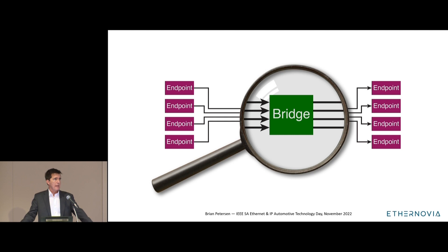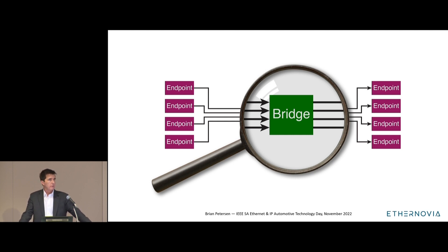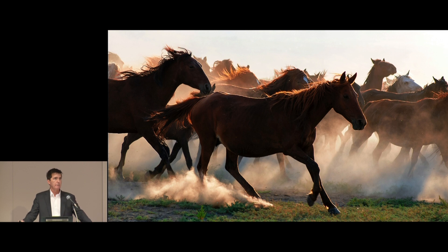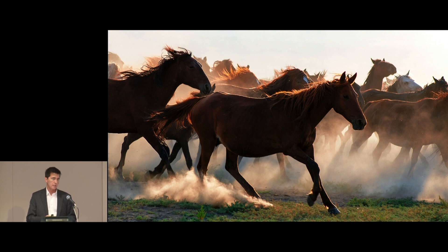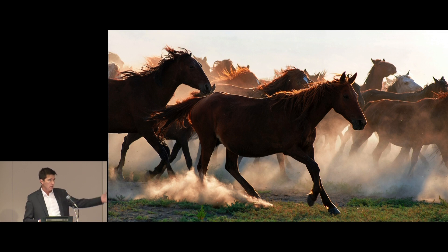Where should we look when we want to manage queue congestion? The TSN standards spend a lot of time focusing on the bridge, and that's understandable since the role of 802.1Q is to define the behavior of bridges. The challenge is that focusing on the bridge is like closing the barn door after the horses have already run away. A bridge can limit its transmission rate, but it only has two defense mechanisms to protect its own queuing resources: flow control to the upstream link partner, or dropping packets — and neither solution is ideal.